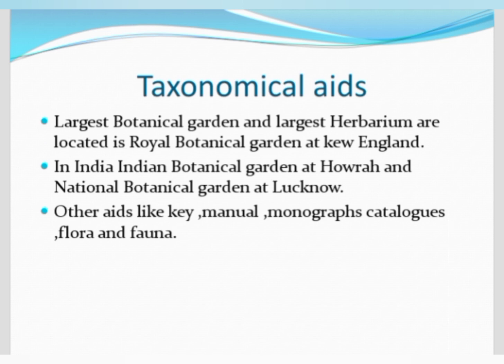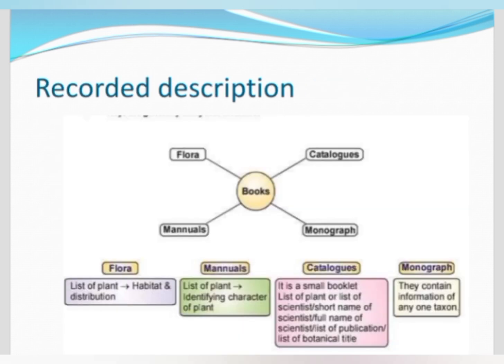The largest botanical garden and largest herbarium are located at the Royal Botanical Garden at Kew, England. In India, they are at the Indian Botanical Garden at Haura and National Botanical Garden at Lucknow. Other taxonomic aids include key, manual, monographs, catalogs, flora, and fauna. Flora is a list of plants with habitat and distribution. A manual is a book listing plant identification characters. A catalog is a small booklet listing plants or animals with their scientific names. A monograph contains information about one taxon.